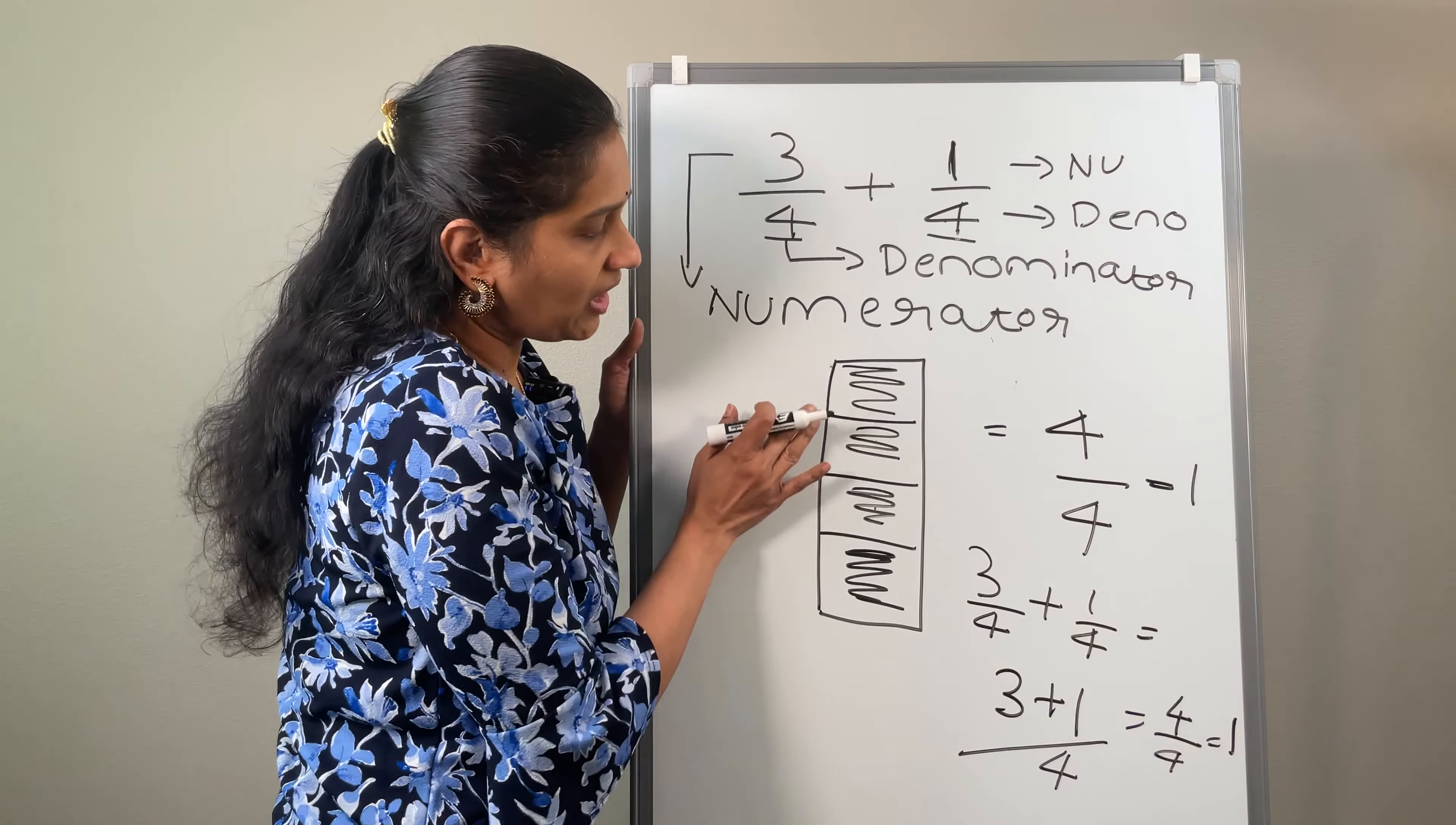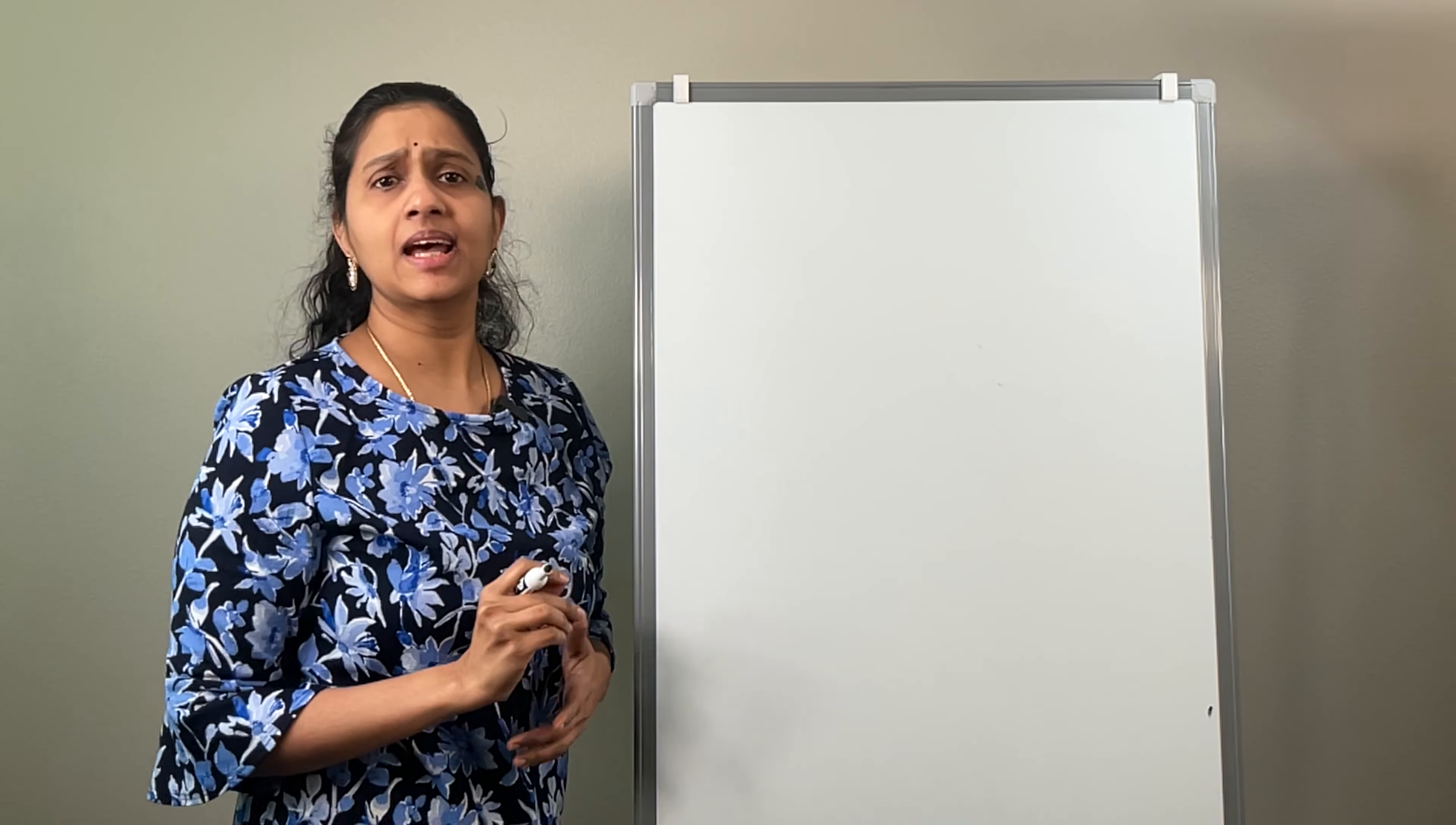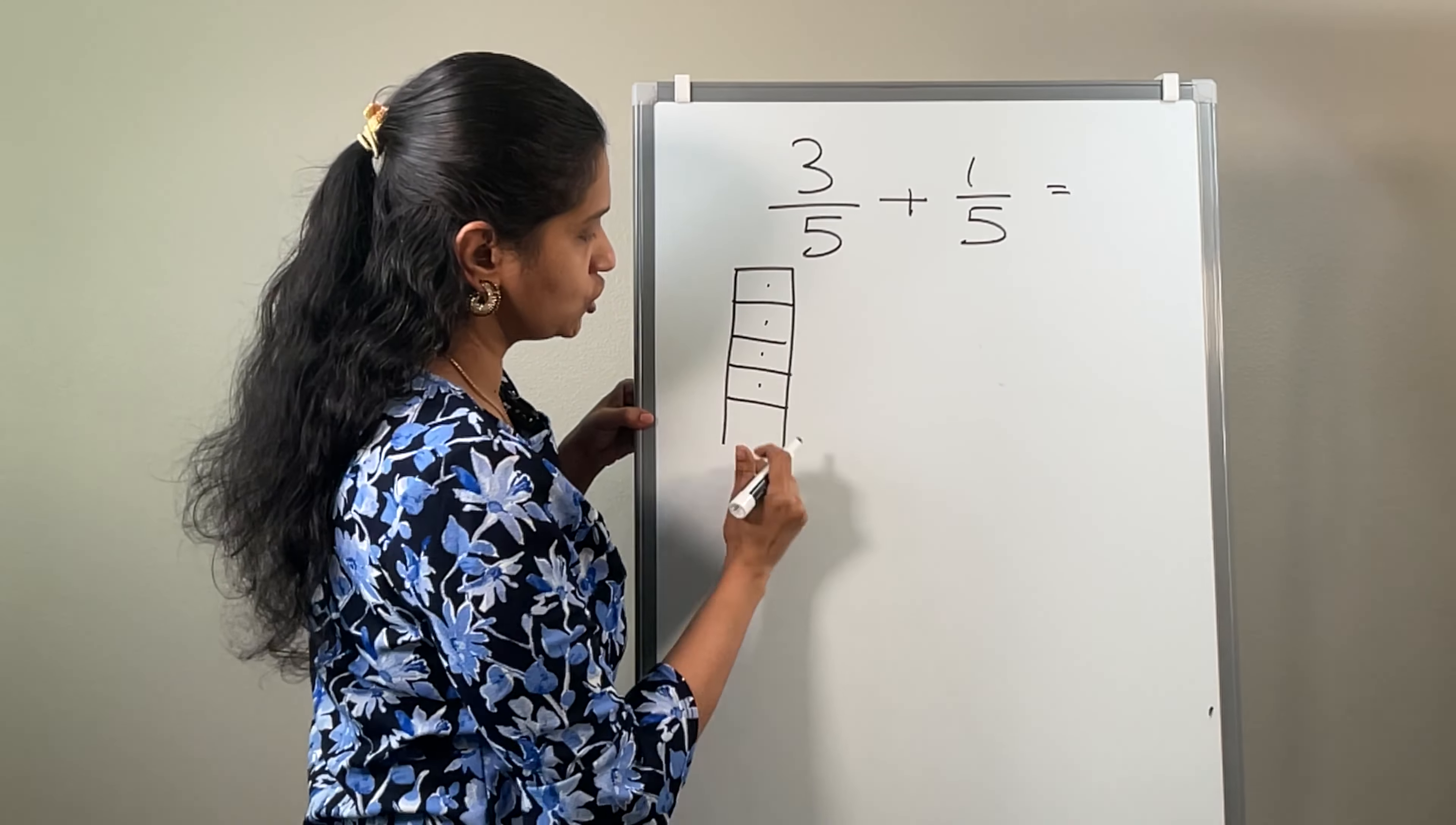Which means we are dividing the rectangle into 4 parts and shading the number that is given in the numerator. Since it is addition, you will just add all the shaded numbers by the total available. Now, let us consider another example. Say, 3 by 5 plus 1 by 5. This can be solved using the rectangle. You can just draw a rectangle and how many parts does it need to be divided? 5 parts. So, 1, 2, 3, 4, 5. I have divided it into 5 parts.